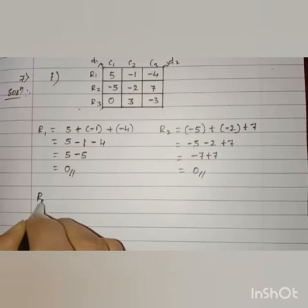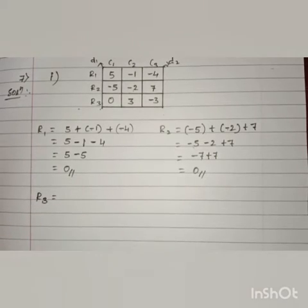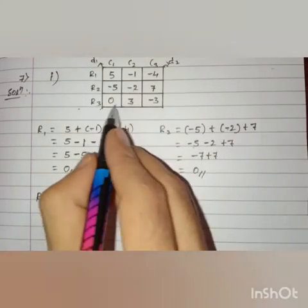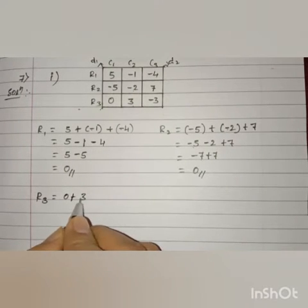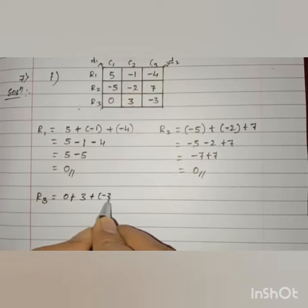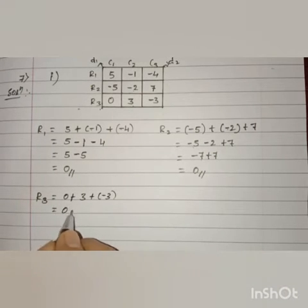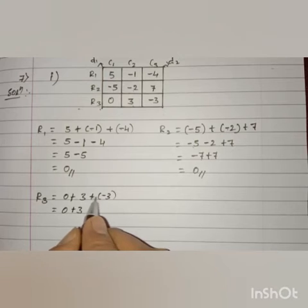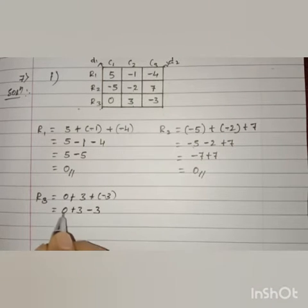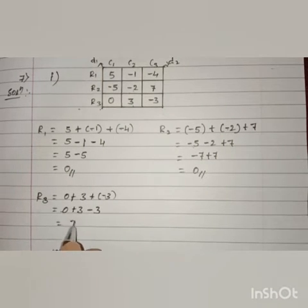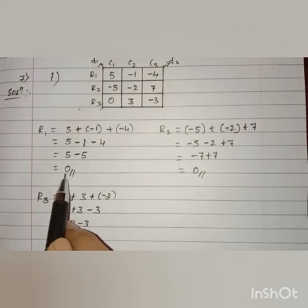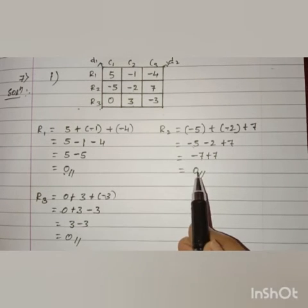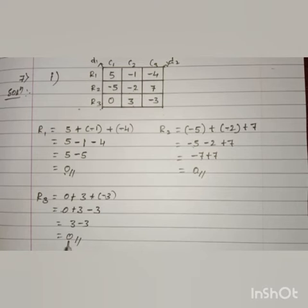Let us find out the sum of row 3. In row 3 we have 0, 3, and minus 3. So 0 plus 3 plus minus 3. Zero plus 3 is 3, and 3 minus 3 is 0. So the sum of row 3 is also 0. We got row 1: 0, row 2: 0, row 3: 0.